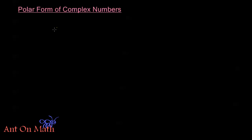Hello and welcome back to Anton Math. In this video we're going to start talking about the polar form of complex numbers. The polar form of complex numbers is very similar to the polar form we've used in the past with rectangular coordinates x and y. Let's set up our imaginary plane and see what the polar form of complex numbers looks like — we want a way to describe a point z in terms of r and theta, just like with our other polar form.